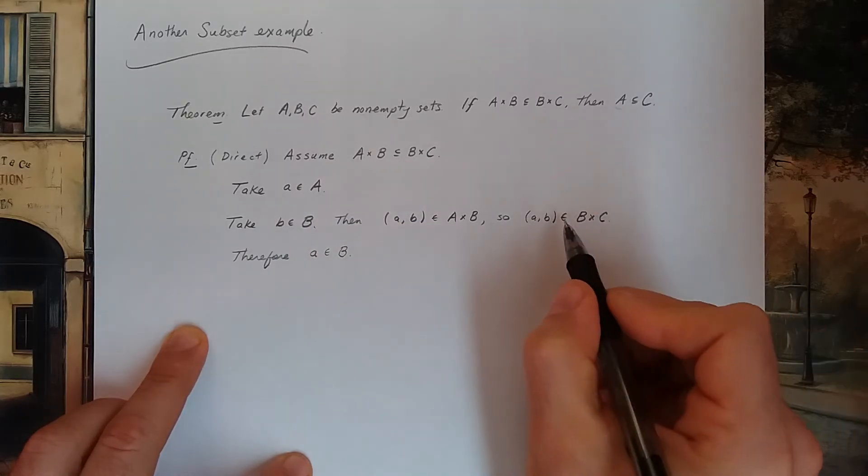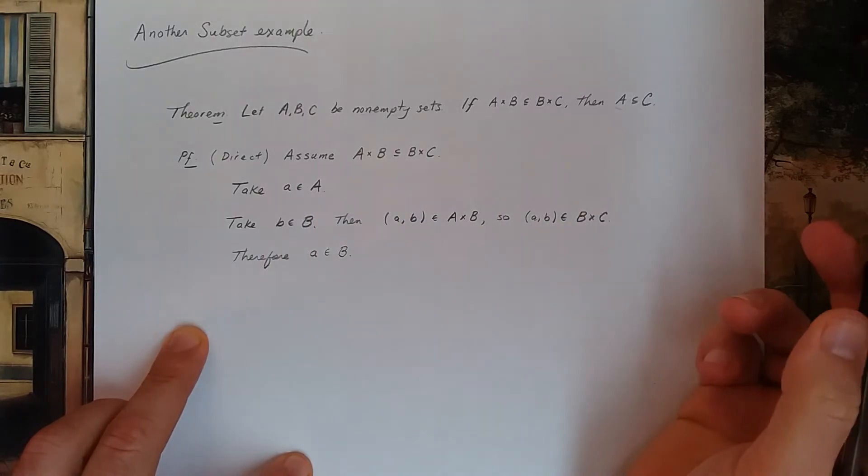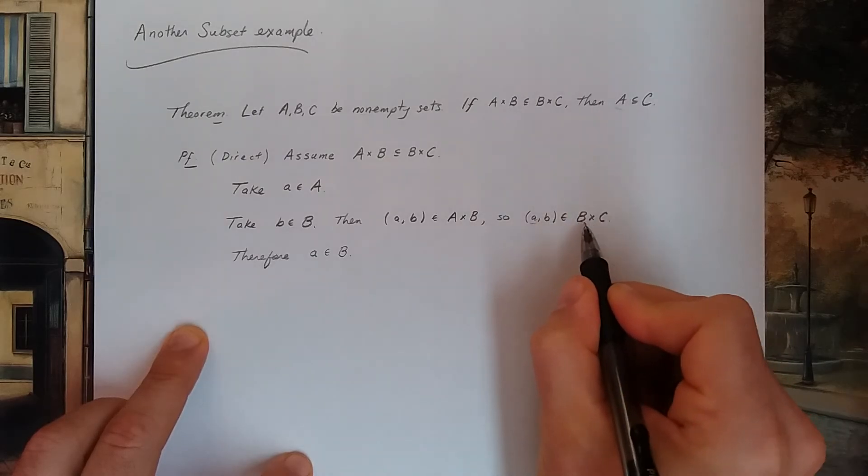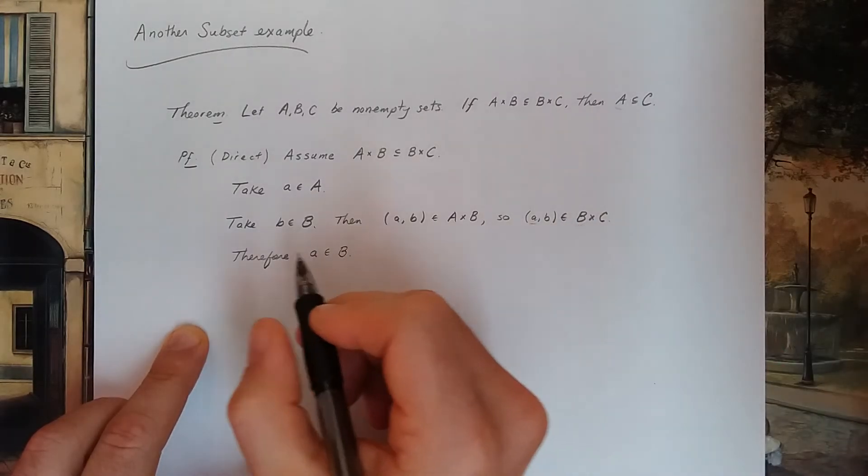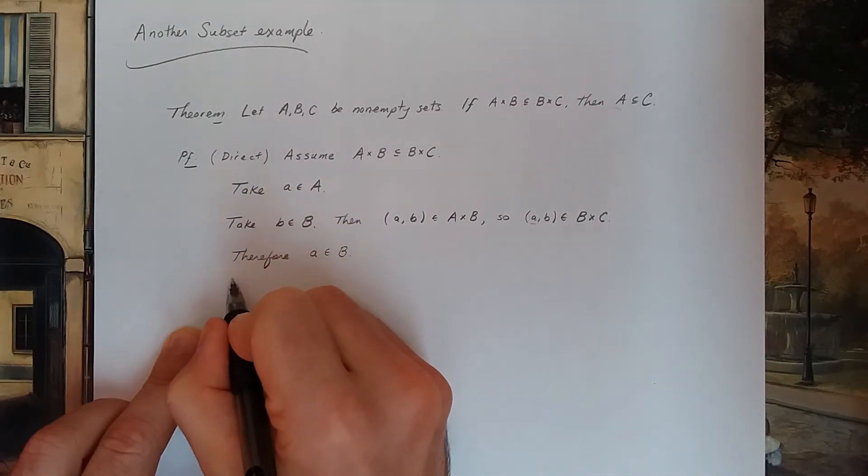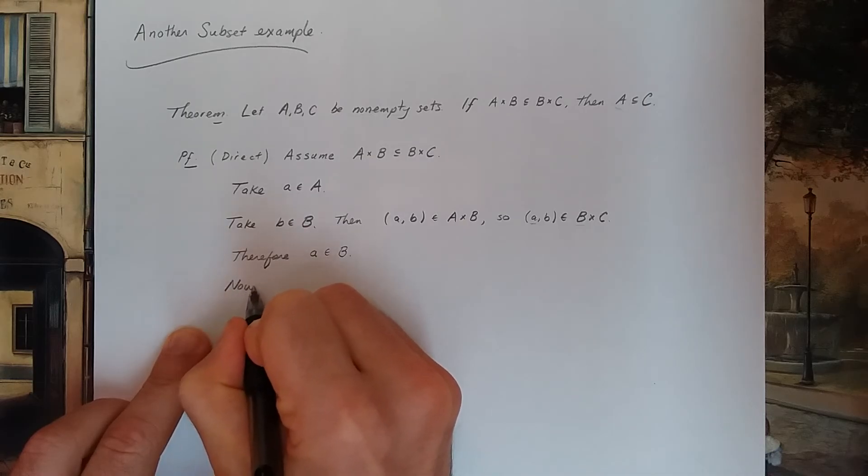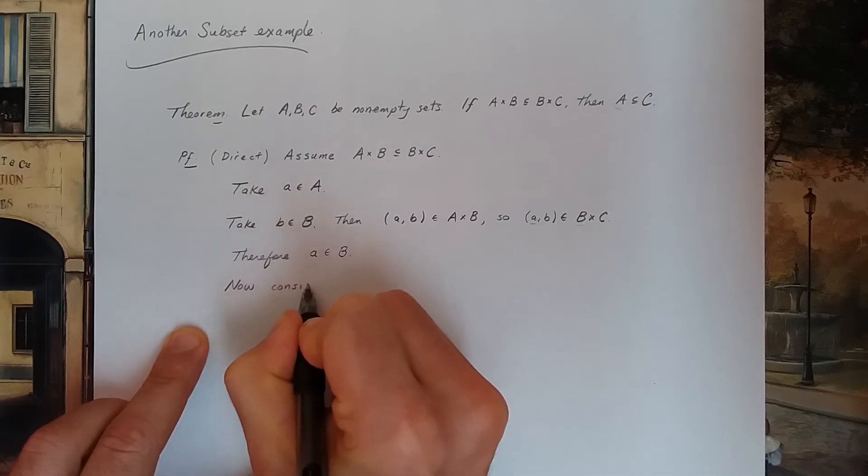So three sets that are not the empty set. Then I'm going to try to prove this claim. If A cross B is a subset of B cross C, then A is a subset of C.